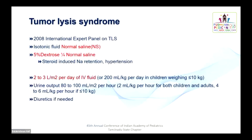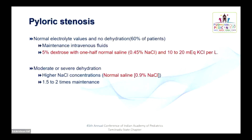For tumor lysis syndrome, the 2018 international expert panel recommends isotonic normal saline at 2–3 liters/m²/day of IV fluids, targeting urine output of 80–100 ml/m²/hour. Monitor for volume overload; if needed, use diuretics to augment urine output. If the child is on steroids and has hypertension or sodium retention, use 5% dextrose with quarter-normal saline to prevent renal damage.